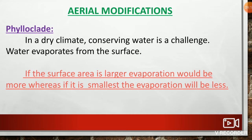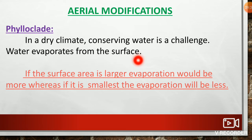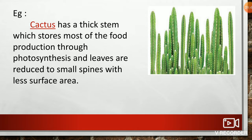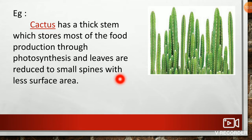Aerial modifications — Phyloclide: In a dry climate, conserving water is a challenge. Water evaporates from the surface; if the surface area is larger, evaporation would be more, whereas if it is smaller, evaporation will be less. For example, cactus has a thick stem which stores most of the food produced through photosynthesis, and leaves are reduced to small spines with less surface area.